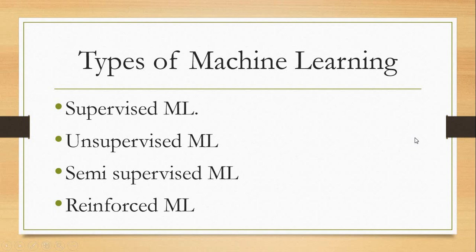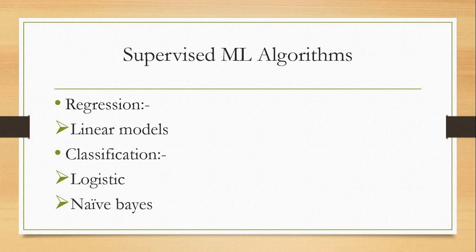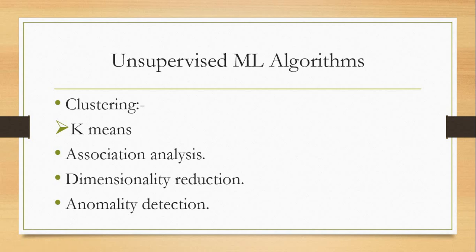In supervised machine learning, you deal with two main categories: regression models and classification models. The key difference is that regression models have continuous response values — like the price of a house, weight, or height. Classification models have response variables that are classes, such as boy or girl, or animal categories like elephant. So regression outputs are continuous values, while classification outputs are classes or factor values — examples include linear models for regression and logistic regression or KNN for classification.